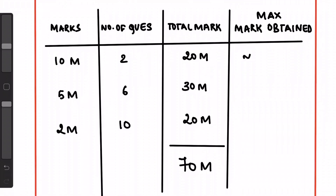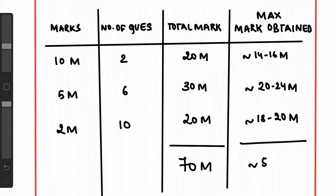No matter how well you write an answer, the maximum marks you get for a 10 marker will be about 7 to 8, for a 5 marker it might be 3 to 4.5, and for a 2 marker you get full 2 marks only if you write all relevant points. So roughly, the maximum you can get out of 70 is about 50 to 54 marks. Please do not waste time putting in every bit of information you know, because no matter how well you write, full marks will not be given.